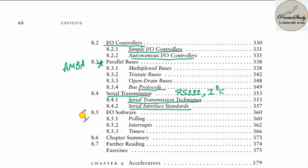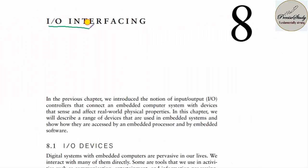The I/O software topic is very important. We need to talk about the basic difference between polling and interrupt — the advantages and disadvantages of polling over interrupt and vice versa. The timers topic is also important. Let us now discuss I/O interfacing in detail.